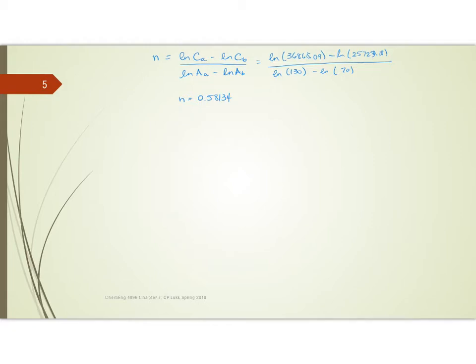Now I can use this with either C sub A or C sub B to get the cost of the new one. So using what I've designated as A, the size I want is 100, the size I start with was 130, N is 0.58134,